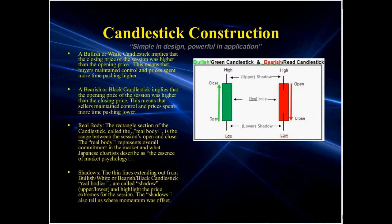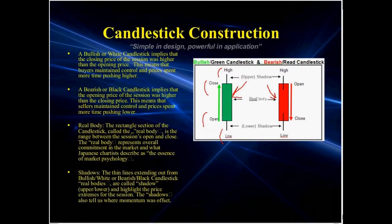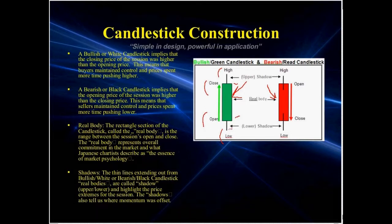Now, very basic concepts of candlesticks. There are four pieces of information in a candlestick: the open, the close, the high, and the low. Originally, a white candlestick indicated bullish and a black candlestick bearish. Nowadays with color, we have green and red, which is more intuitive. The body is the part from the open to the close. We call the other parts the shadows — some people call them wicks — which include the highs and the lows.